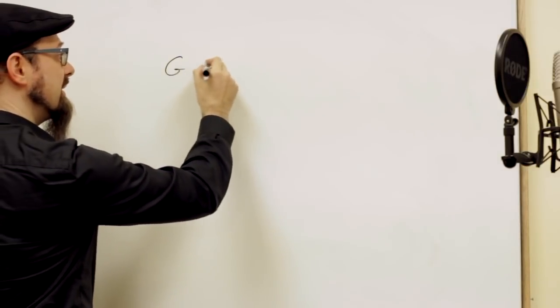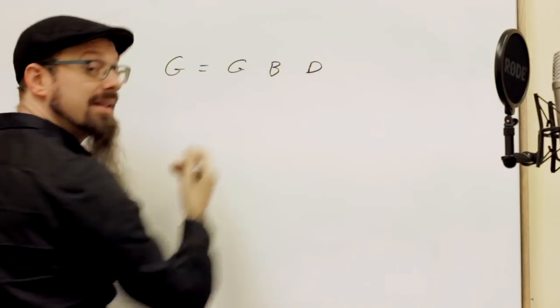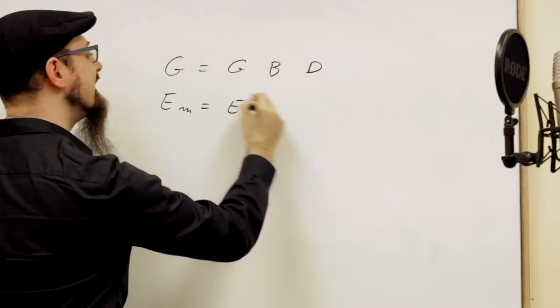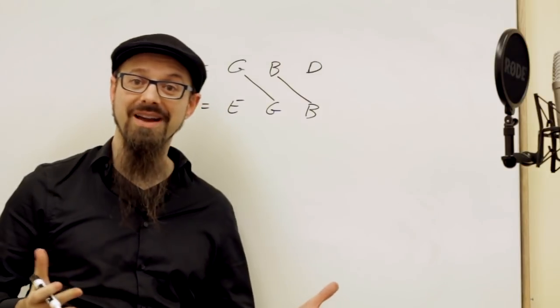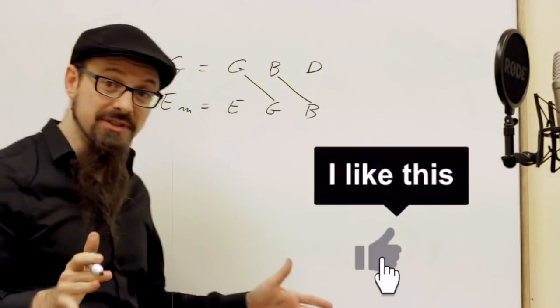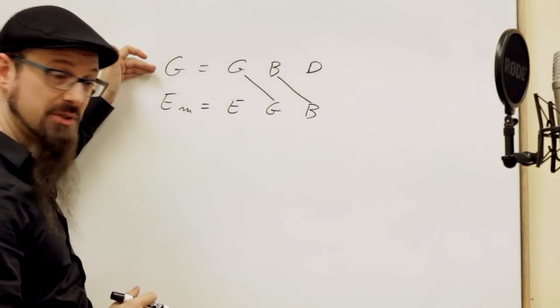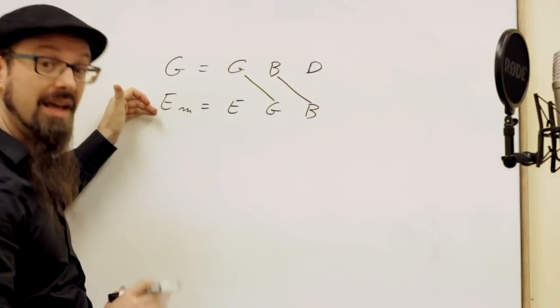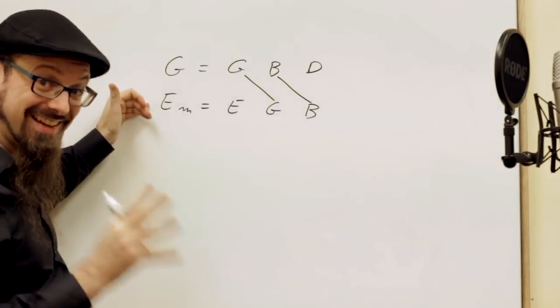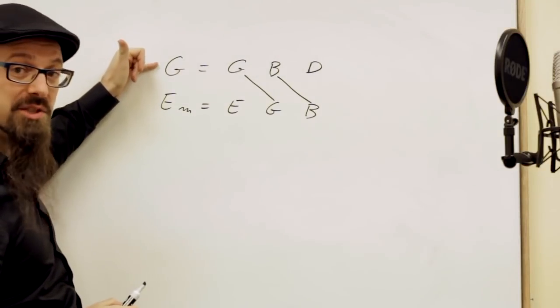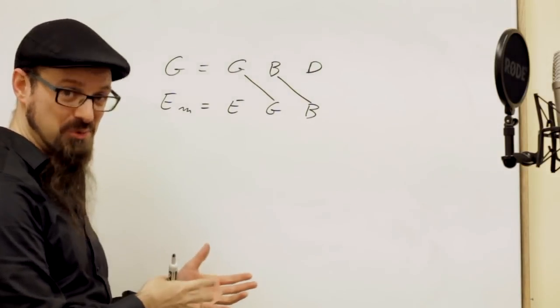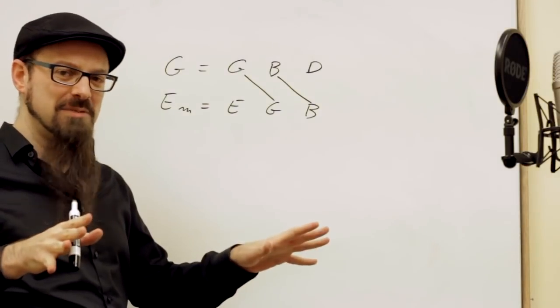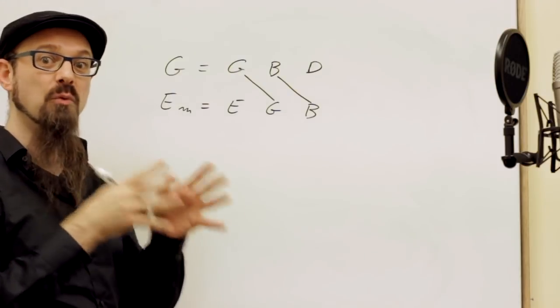The G major chord contains the notes G, B, and D. The E minor chord contains the notes E, G, and B. As you can see, those two chords have two notes in common out of three. So wherever you play a G major chord, you can be sure that the E minor chord will sound similar. Now, this is not a 100% guarantee that wherever you play G major you can play E minor instead, but it's a strong indication that it probably will. Not a 100% guarantee, but it's definitely worth trying.